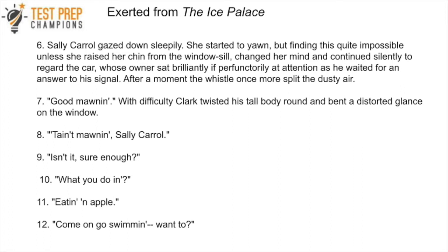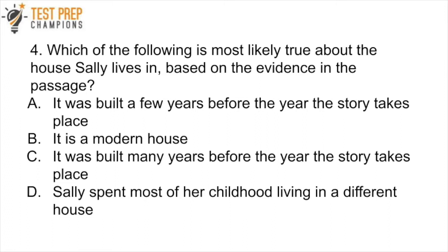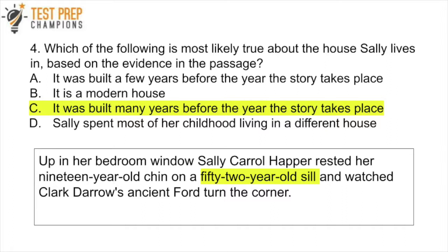Question 4: Which of the following is most likely true about the house Sally lives in, based on the evidence in the passage? A. It was built a few years before the story takes place. B. It is a modern house. C. It was built many years before the year the story takes place. Or D. Sally spent most of her childhood living in a different house. The key clue is that Sally Carol Happer rested her 19-year-old chin on a 52-year-old sill. From this, we can infer that the house was built many years before the story takes place. The answer is C.